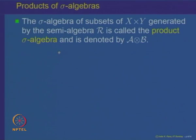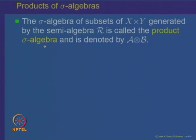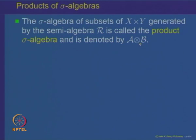Since this collection is a semi algebra of subsets of X×Y, but in general may not be a sigma algebra, we can generate a sigma algebra by these rectangles. The sigma algebra generated by these rectangles is denoted by A⊗B, and A⊗B will denote the sigma algebra generated by the rectangles R.